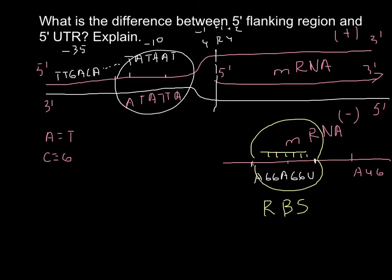So this is going to be the place where messenger RNA would be translated into the protein sequence. So here we have a sequence that would be transcribed but not translated. So this we call five prime UTR.